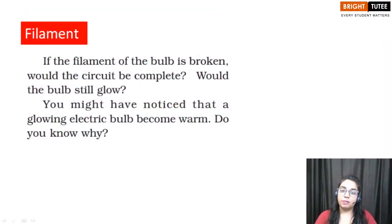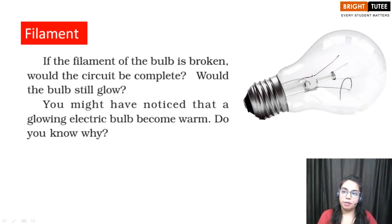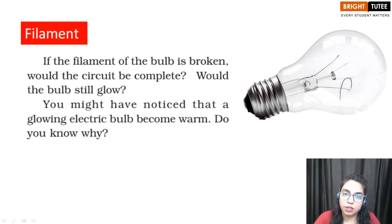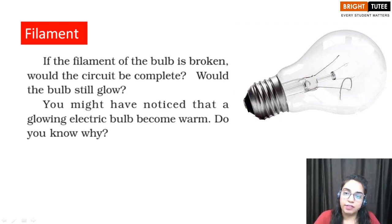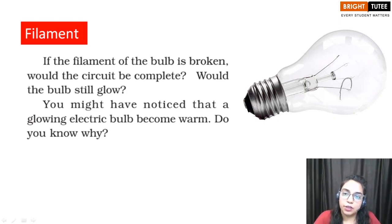What is the filament? In the center of a bulb you can observe a thin wire known as the filament, made using the metal tungsten. Sometimes the bulb gets fused — you can identify a fused bulb because this wire will be broken. Whenever this wire is broken, the circuit breaks, becomes incomplete, and the bulb will not glow.